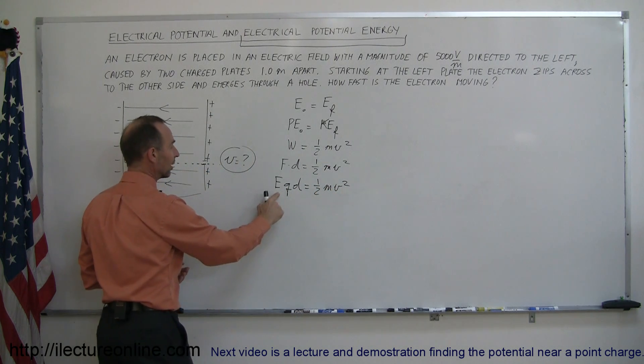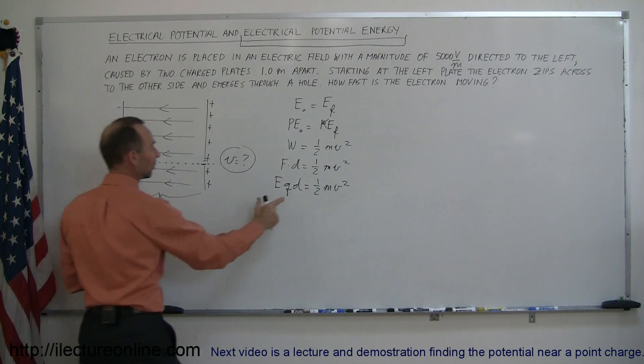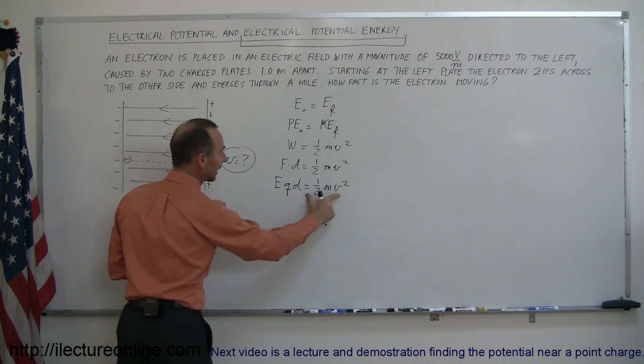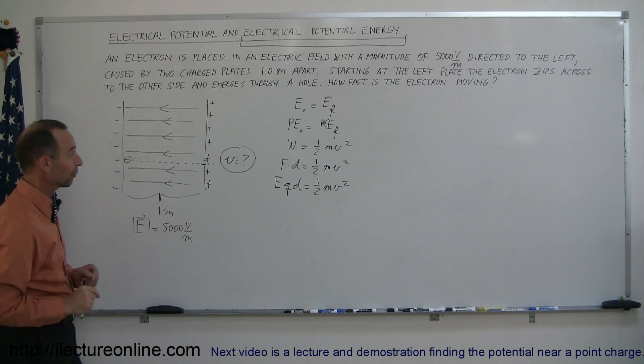So the strength of the electric field times the charge of the electron times the distance we moved it to get it there, that's the potential energy stored equals the kinetic energy when it emerges on the other side. So now all we have to do here is solve that equation for v.